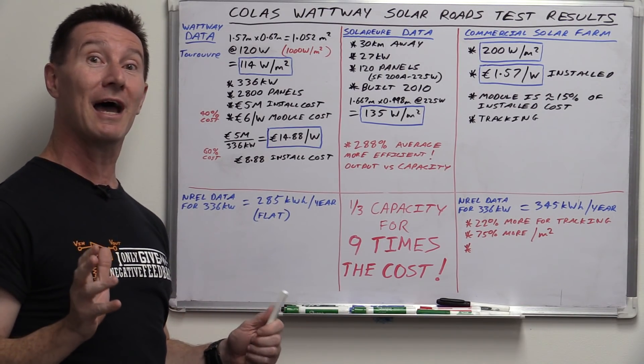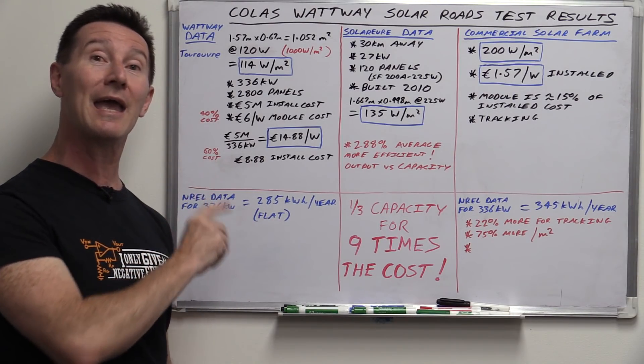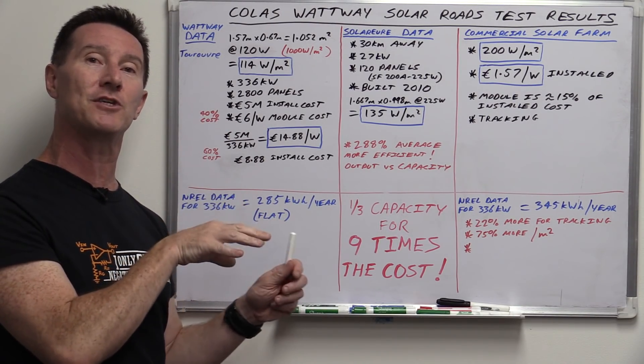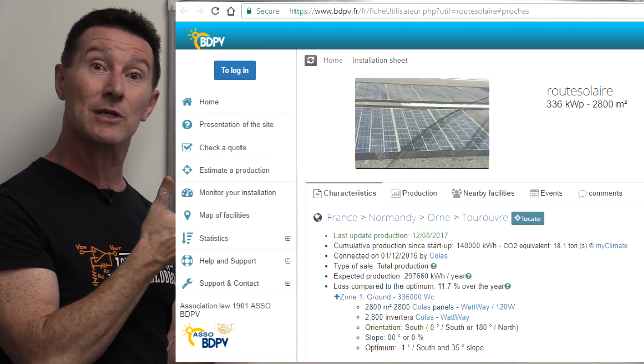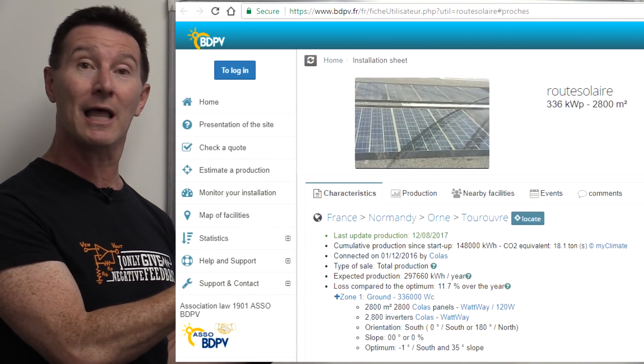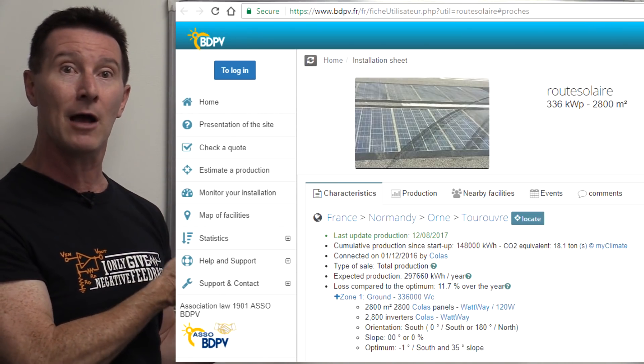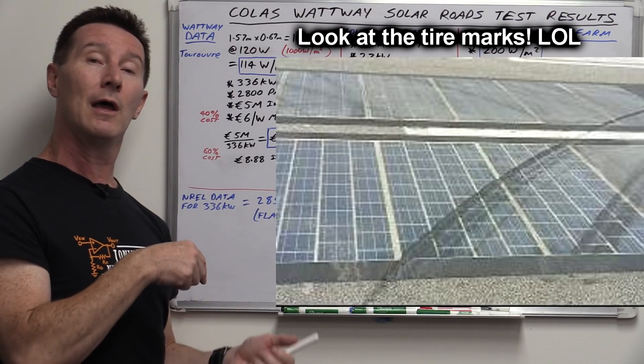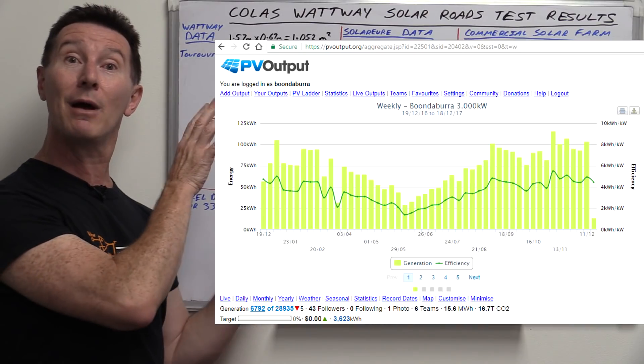But I know what you're saying, Dave, show us the data. Can we actually see the test results from this thing? Yes, we can. I'll link it in down below. There's actually a French website, which actually has like thousands of these solar farm installations and people's houses and things like that. You can just upload your data. It's like pvoutput.org. I've got my own home solar power system. I'll link in videos and I'll link in my one down below as well.